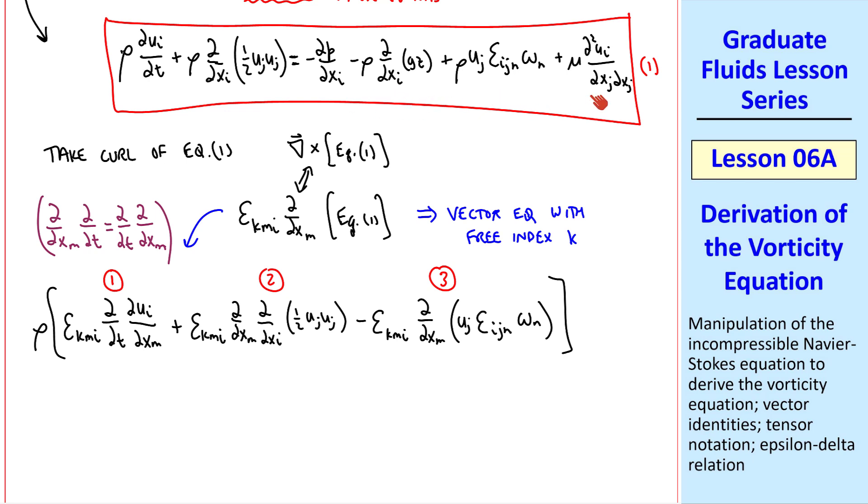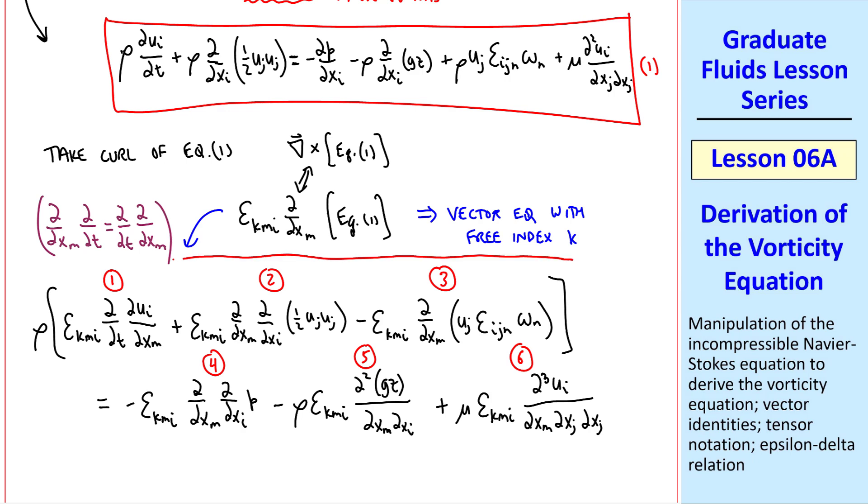And since we've moved this term to the left side, there are three terms remaining on the right-hand side. Namely, negative epsilon kmi del-del-xm del-del-xi of the pressure minus rho epsilon kmi del-squared gz del-xm del-xi. Where I used the del-squared notation here instead of writing these out separately, we could have done the same thing here. Finally, the viscous term, mu epsilon kmi del-cubed ui del-xm del-xj del-xj. We'll number these terms 4, 5, and 6. And this entire equation, we'll call equation 2.